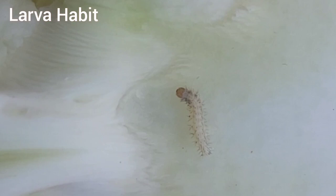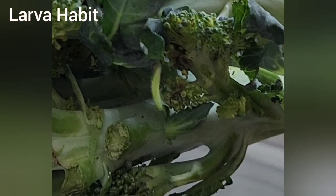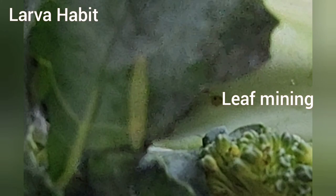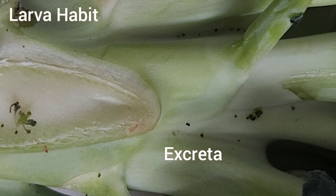Larvae are quite active and when disturbed, wriggle violently, move backward, and spin a strand of silk from which to dangle. The feeding habit of first instar larvae is leaf mining — they burrow into the leaf and begin eating leaf tissues internally. They chew small cavities and holes on leaves, resulting in irregular patches of damage. Larvae leave evidence by their blackish excreta.